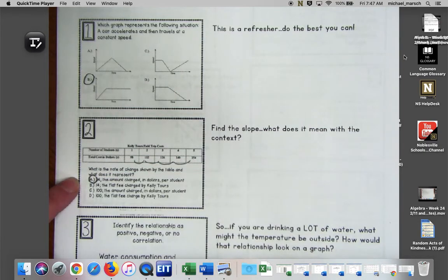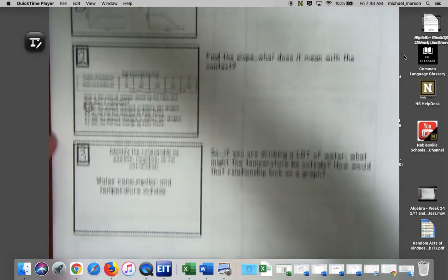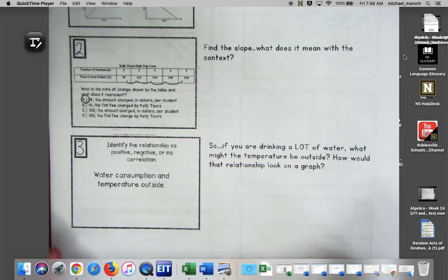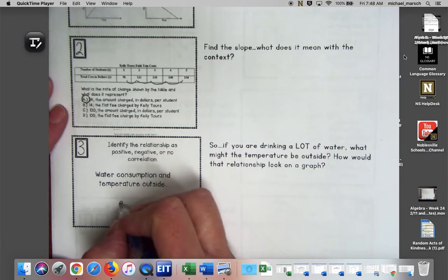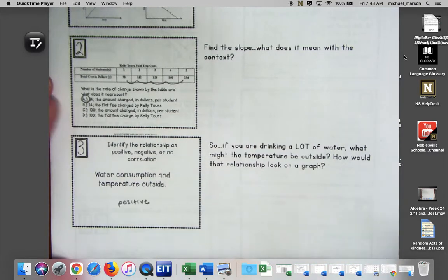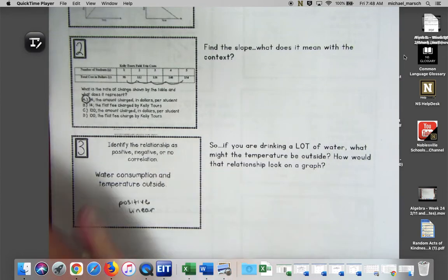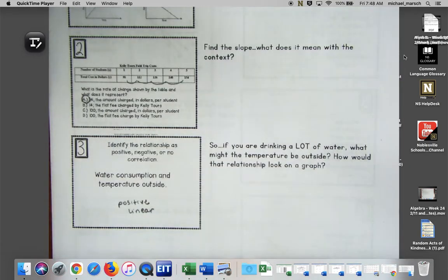Number three, water consumption. I told you guys if you're drinking a lot of water, what might the temperature be outside? So hopefully you chose positive. It would be a positive relationship and it should be linear. We should be able to see a definite trend going across that graph.